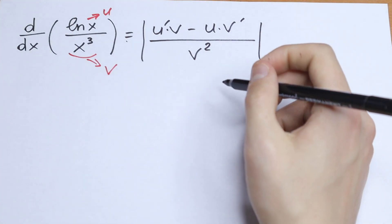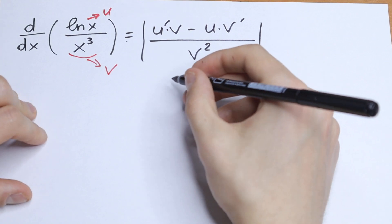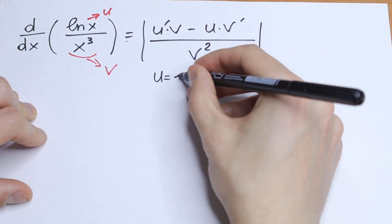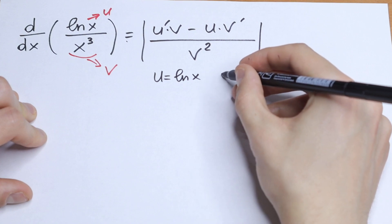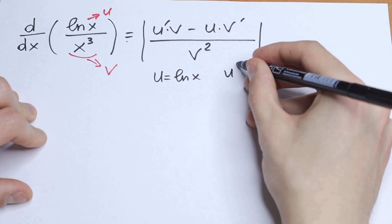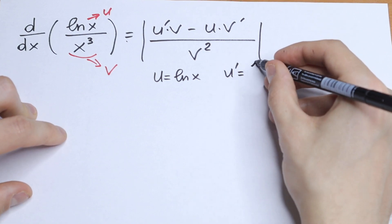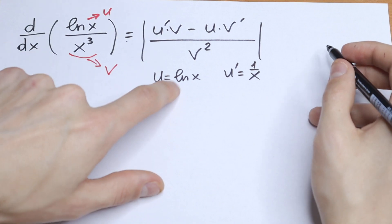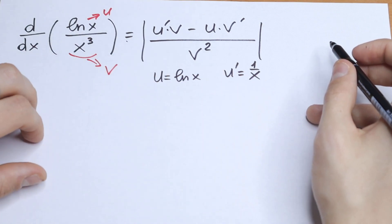So I'll write all of these components right here. u will be natural log x, so u' will be 1 over x. This is the standard table case — this is the derivative of natural log x.